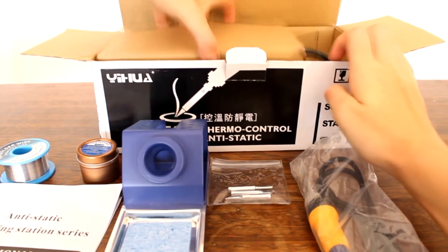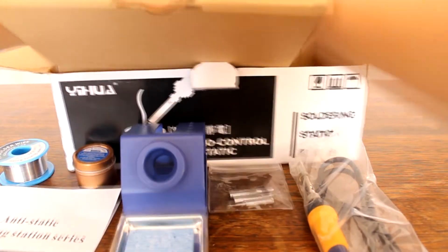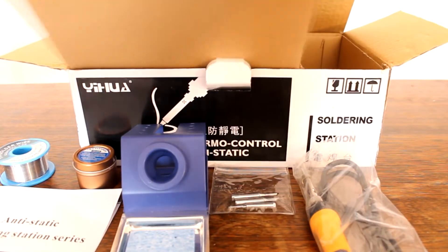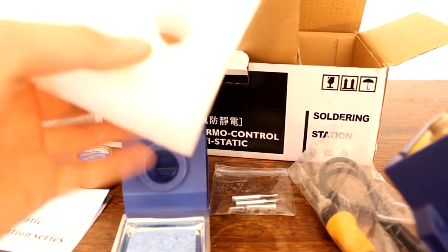So, the bit station. The power supply should be in here. Yeah. So, it's very nice and compact packaging. It's not really wasting too many resources like, say, Hobby King does. Just some protective foam. I guess that's for the knob.